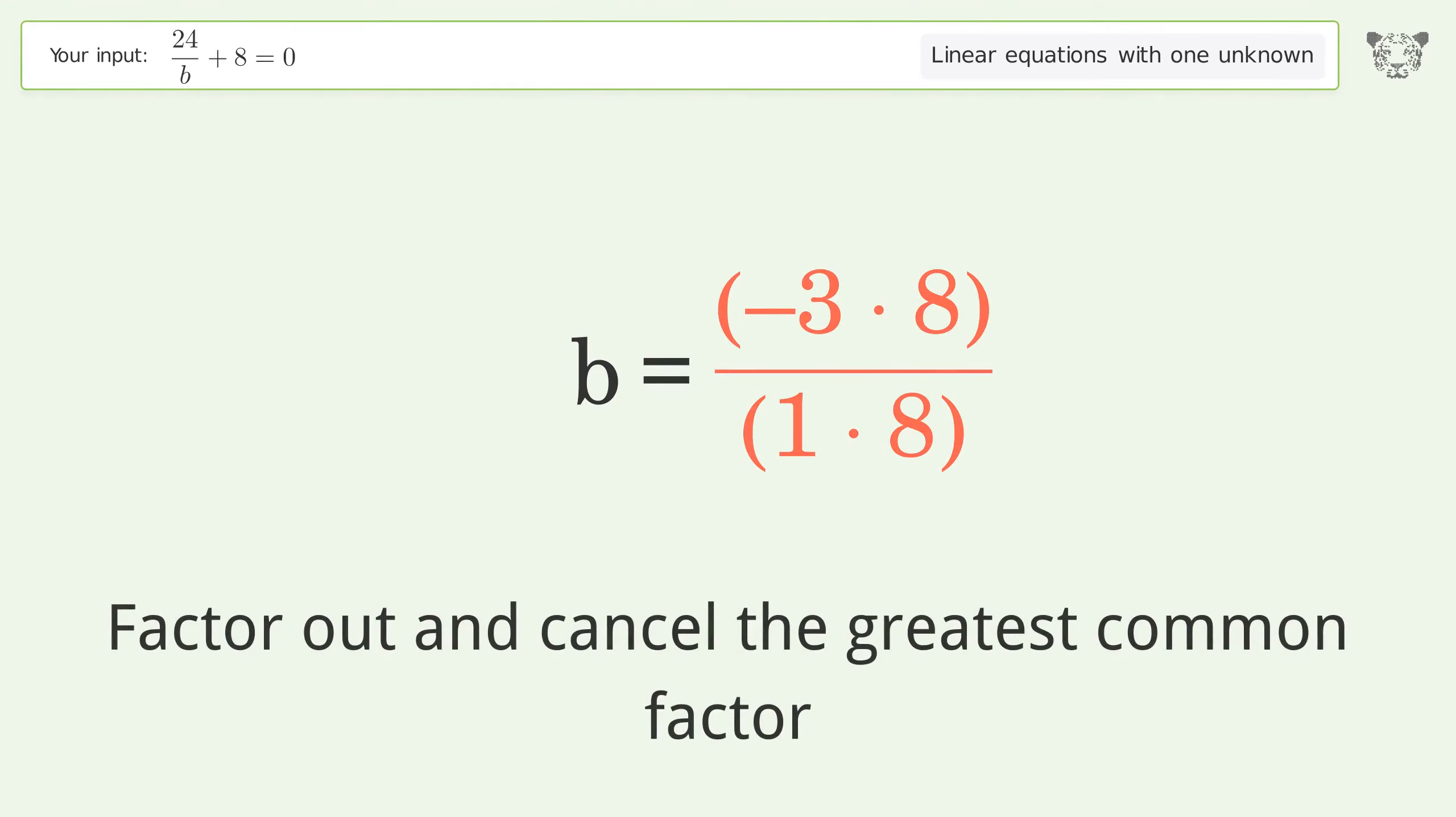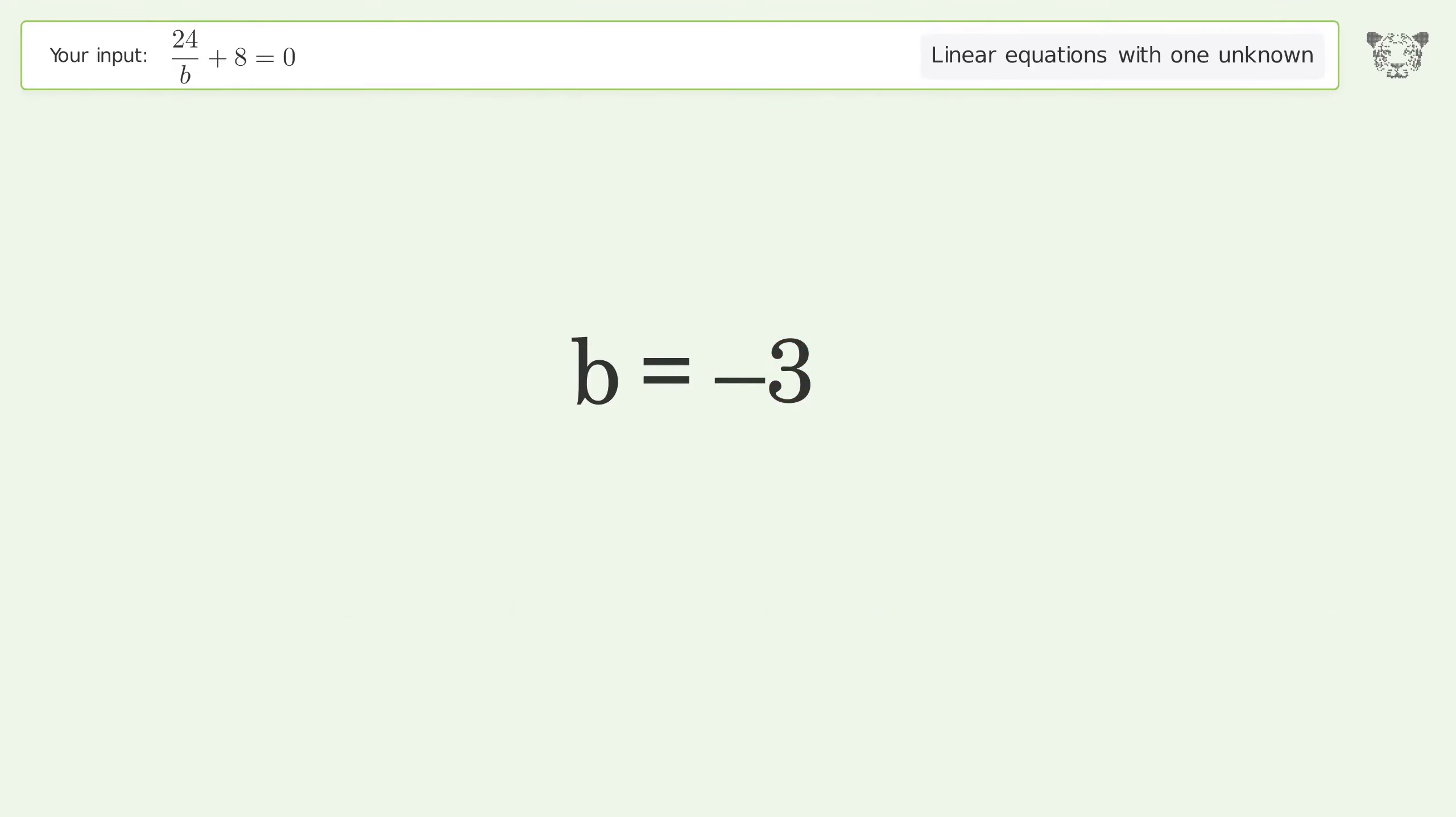Factor out and cancel the greatest common factor. So the final result is b equals negative 3.